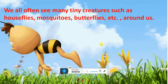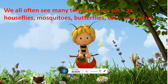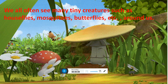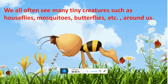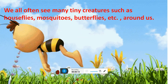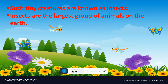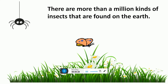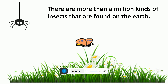We all often see many tiny creatures such as house flies, mosquitoes, butterflies, etc. around us. Such tiny creatures are known as insects. Insects are the largest group of animals on the earth. There are more than a million kinds of insects that are found on the earth.